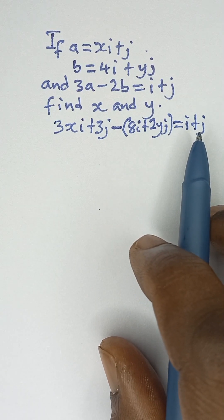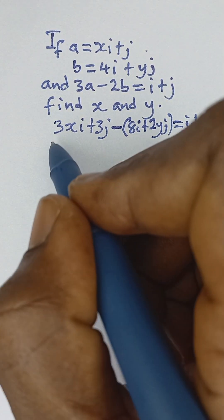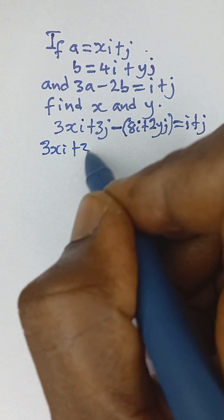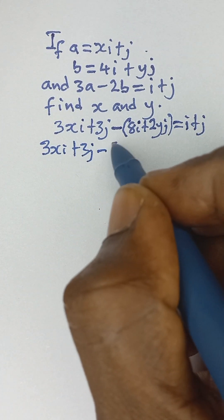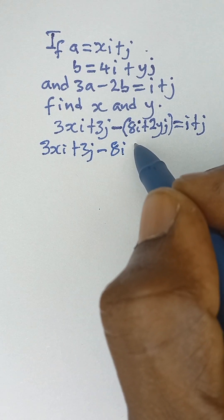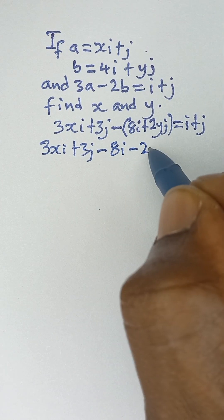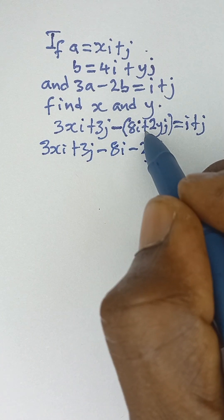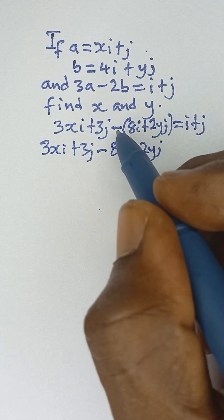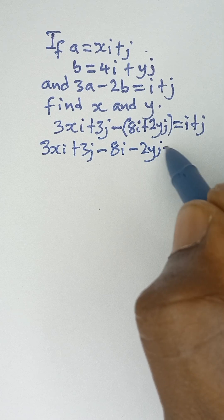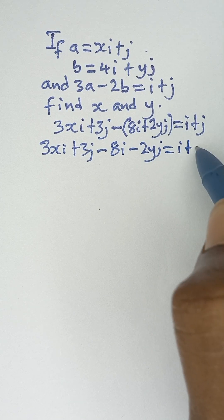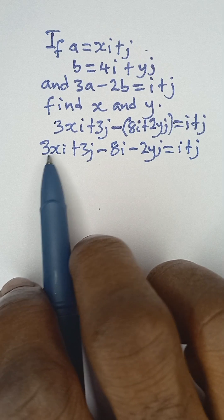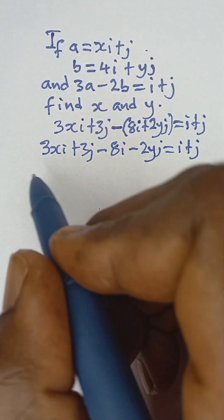So I have 3Xi plus 3J minus 8i minus 2YJ. Don't forget this negative sign — negative multiplied by positive gives us negative — and that is equal to i plus j.